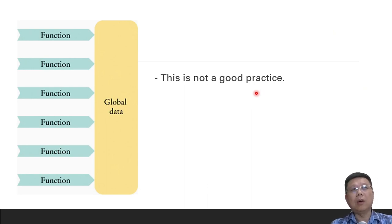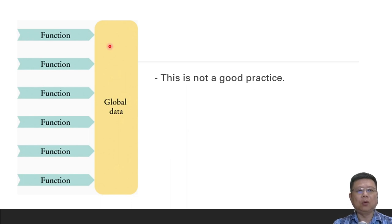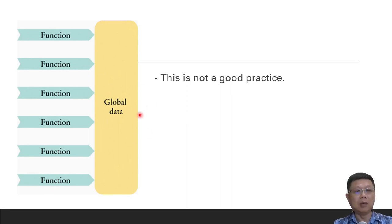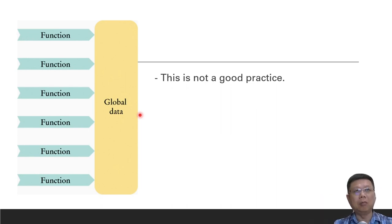If you can recall what we did previously, we found that when the program grows and grows, we may have more functions. In order to solve it faster and easier, we may have global data or global variables. We declare them so that all of the functions can refer to the global data or global variables, and then the main program will work correctly.